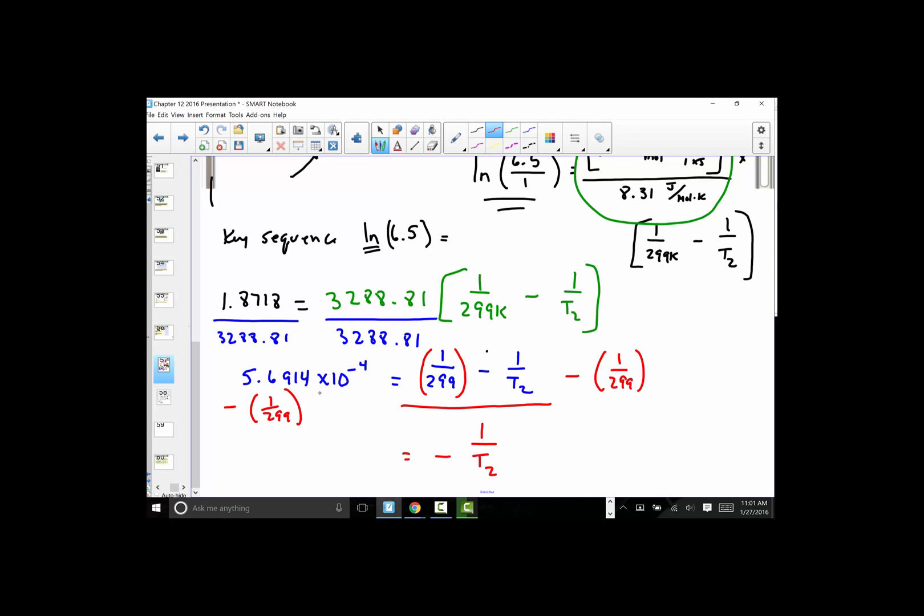So what I'm doing is getting an expression where 1 over T2 with that minus sign still in front of it is going to remain on the right hand side. On my screen I have 5.6914 E negative 4, and I'm going to go minus, parenthesis, 1 divided by 299, close parenthesis, equal. And I get a value of negative 0.0027753.